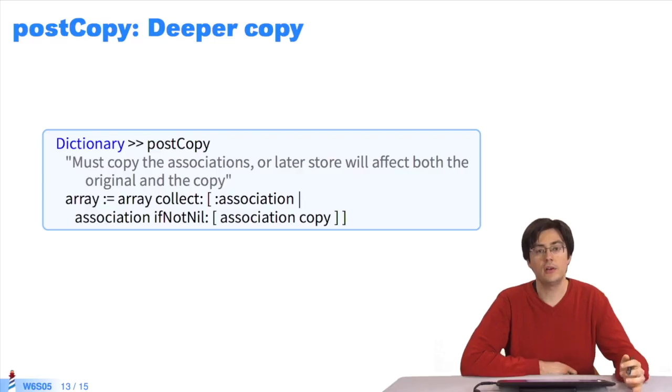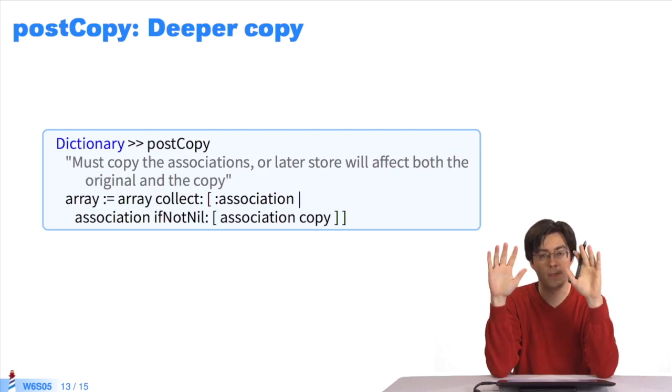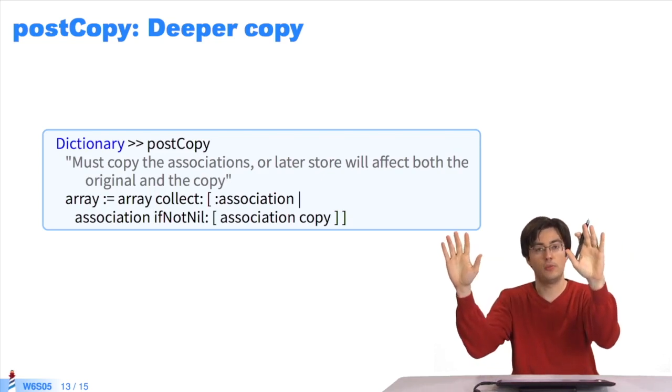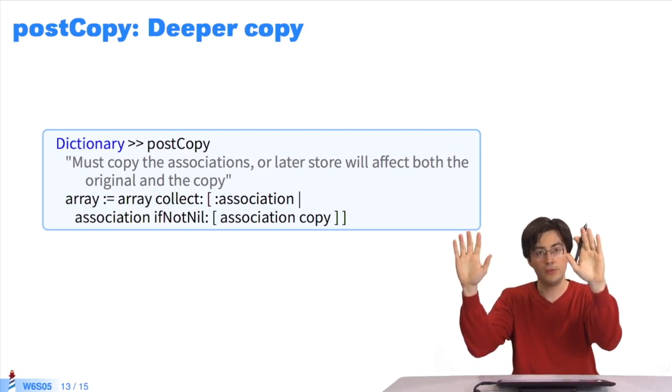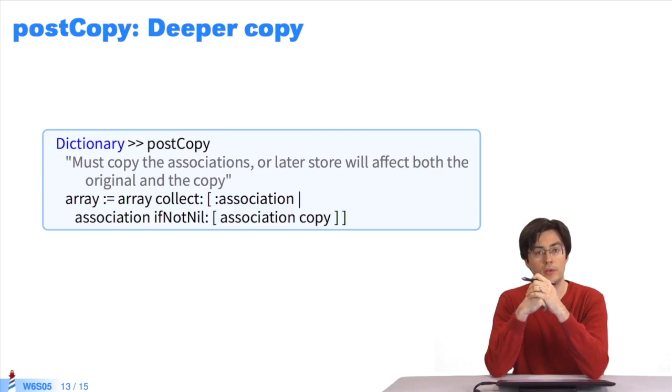With the dictionary, we go even further. A dictionary is a collection of key-value pairs, or a collection of associations. Not only do we want to copy the collection, if we copy a dictionary, we want to copy the collection and each dictionary has its own collection of pairs. But we also want each pair to be different, so that if I modify one, it won't modify the other side.